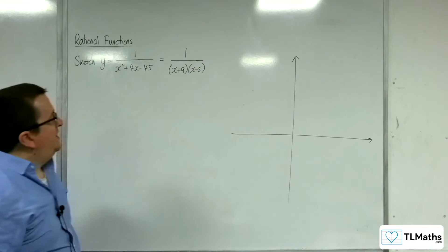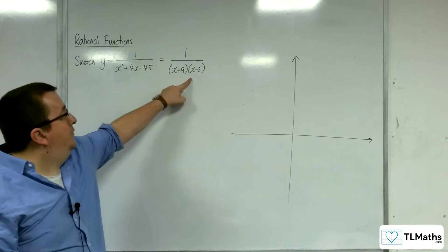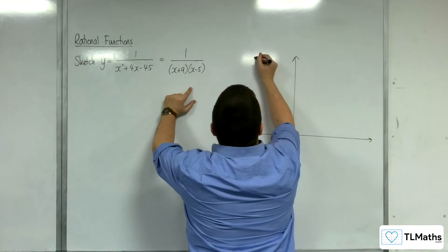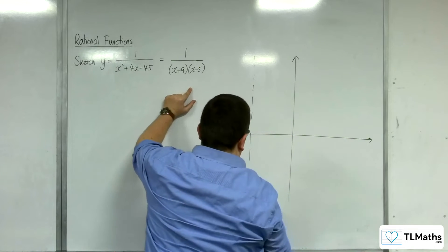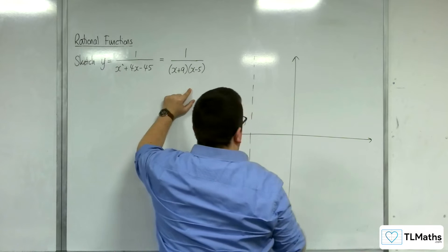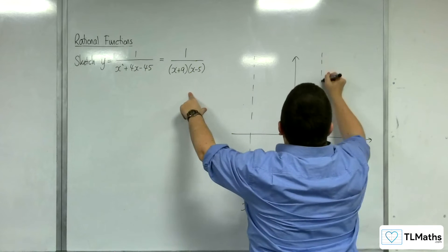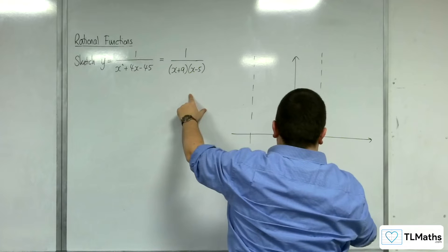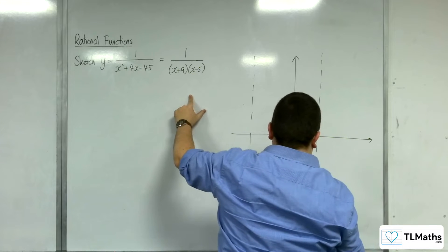So vertical asymptotes will exist when the denominator is 0, so that'll be at minus 9 and 5. So minus 9 can go there, and 5 can go there.